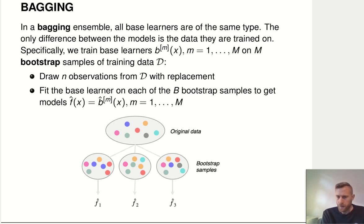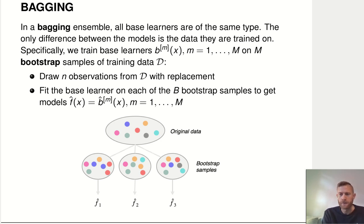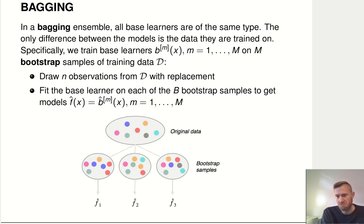Specifically, what we do in bagging — bootstrap aggregation — is that we draw capital M bootstrap samples of the training data. A bootstrap sample is sampling with replacement a dataset of the same size as the original one from the original dataset. So we'll have a couple of observations that come in more than once and a couple of observations that don't get drawn at all. That's a bootstrap sample.